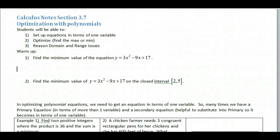Hi, this is calculus section 3.7, we're doing optimization with polynomials. Now when we talk about optimization, we're going to be finding the maximums or the minimums and writing equations for this and setting these situations up.